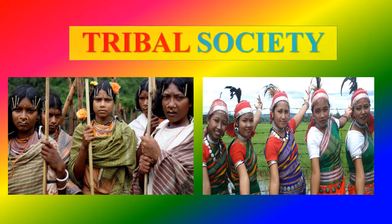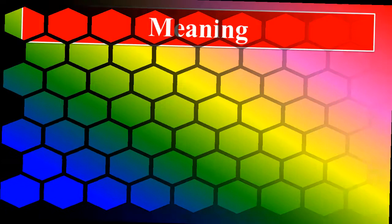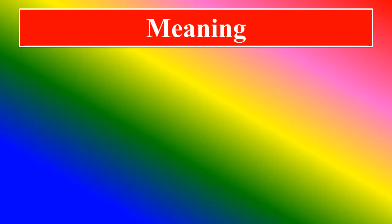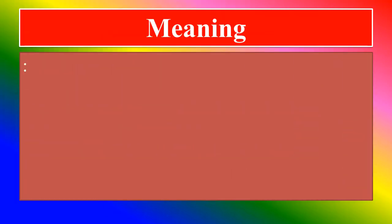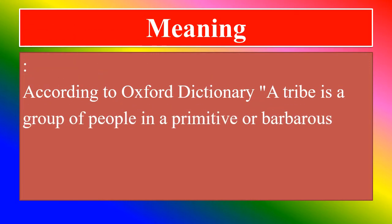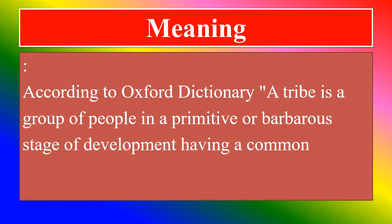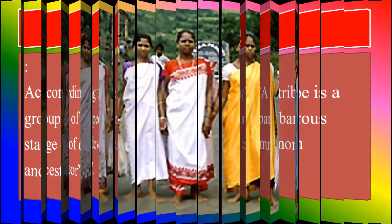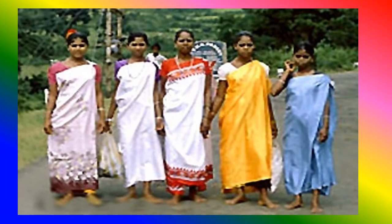Tribal Society. Going into detail on tribal society first. According to the Oxford Dictionary, a tribe is a group of people in a primitive or barbarous stage of development, having a common ancestor. Look at these tribal people with their different cultures.